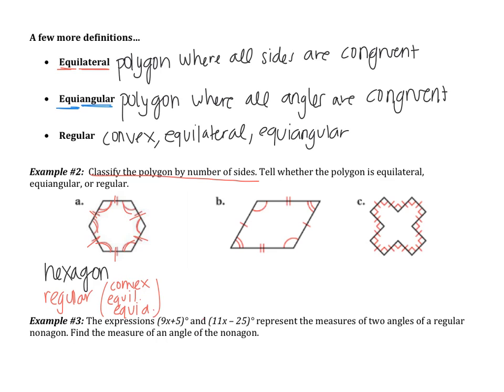B and C I would like you to try. Classify by the number of sides. And then tell whether the polygon is equilateral, equiangular, or regular. Pause the video. Try these two on your own. And then come back when you are finished and we will go over it.